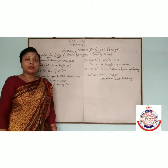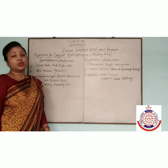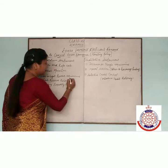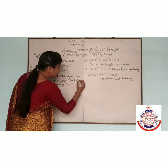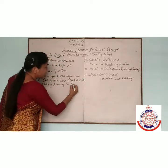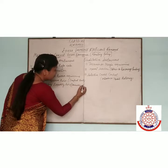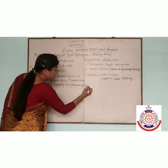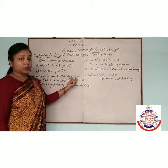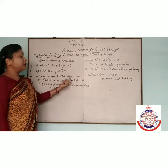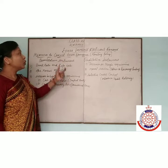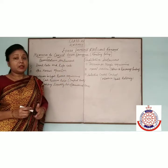Cash reserve ratio is that ratio which is kept with the central bank, out of the total demand deposit. Statutory liquidity ratio is that ratio kept with the commercial bank. If cash reserve ratio is more, then more of the money is kept in the reserve and less money is in circulation. So the problem of excess demand will be removed.